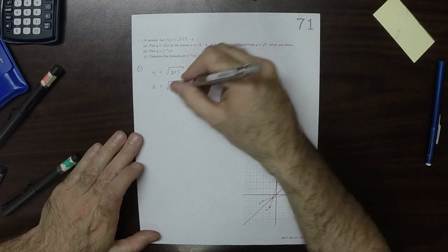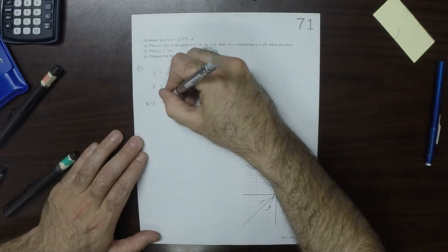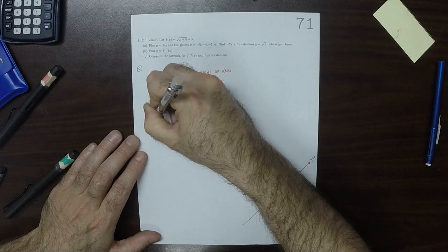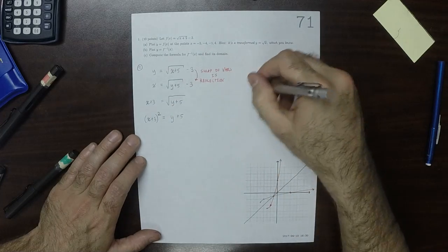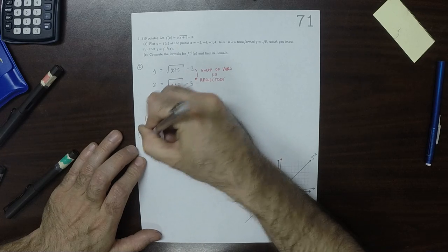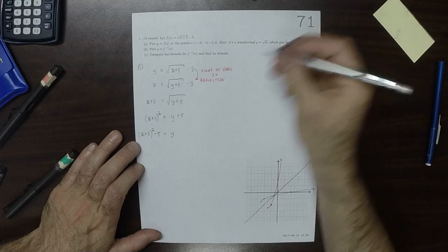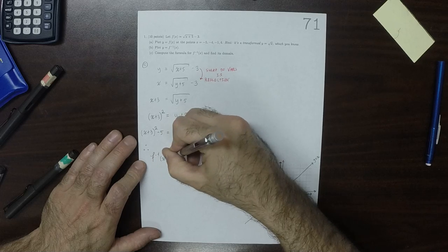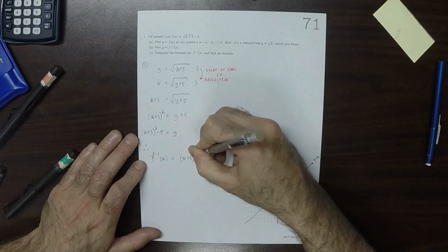So now we want to solve for y. We'll add 3 to both sides. So x plus 3 is square root y plus 5. Now we'll square both sides. So x plus 3 squared is y plus 5. And then subtract 5 from both sides. So x plus 3 squared minus 5 is equal to y. And therefore, we know that the inverse function is x plus 3 squared minus 5.